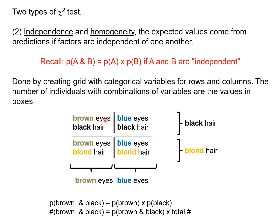In this box we would put the number of individuals with brown eyes and black hair. In this box the number of individuals with blue eyes and black hair, etc. And then we're going to use the assumption of independence to make a prediction on how many individuals we would expect in each box.